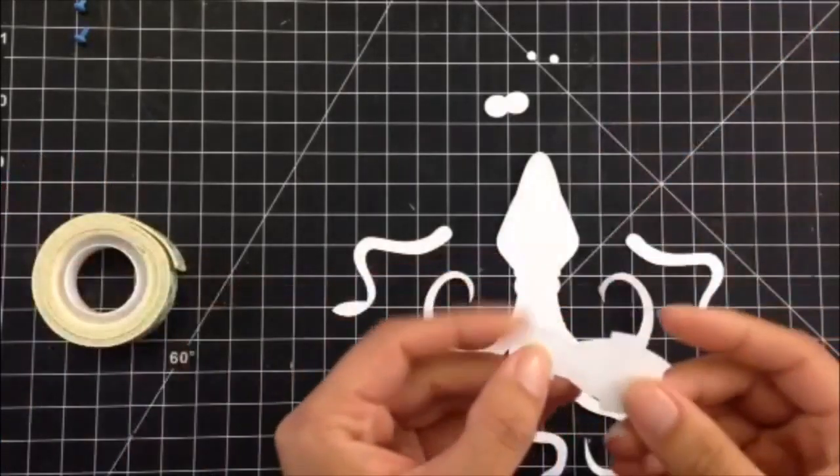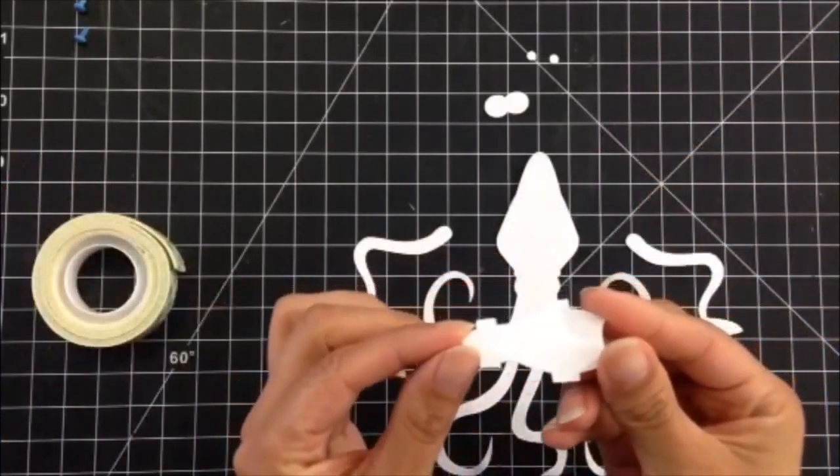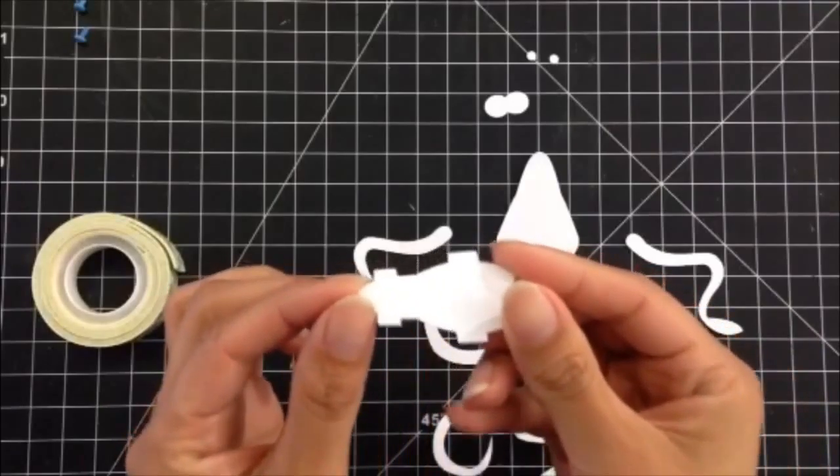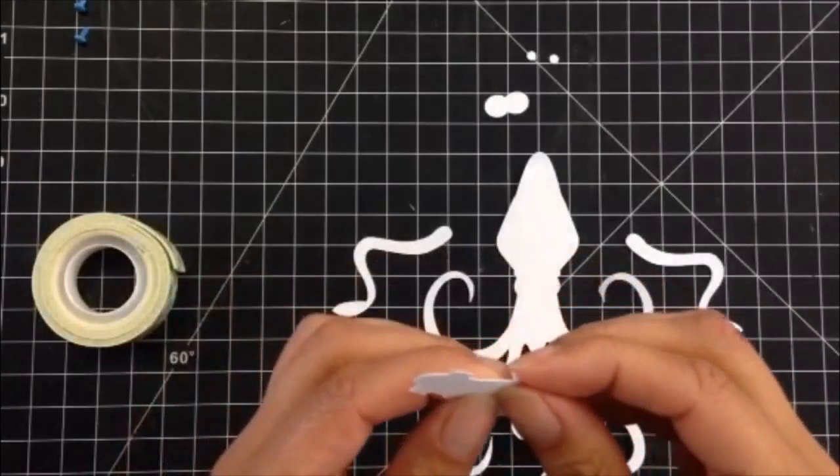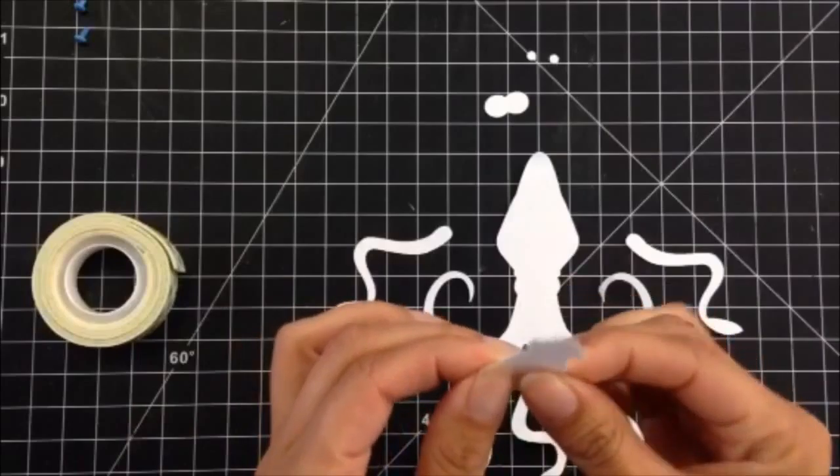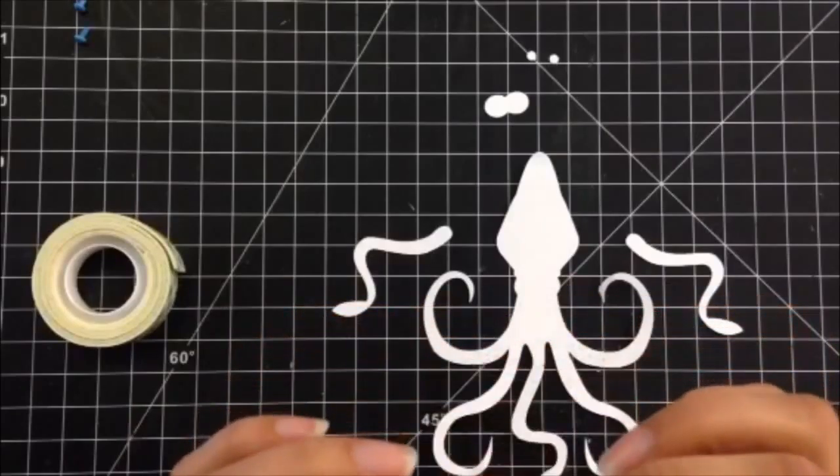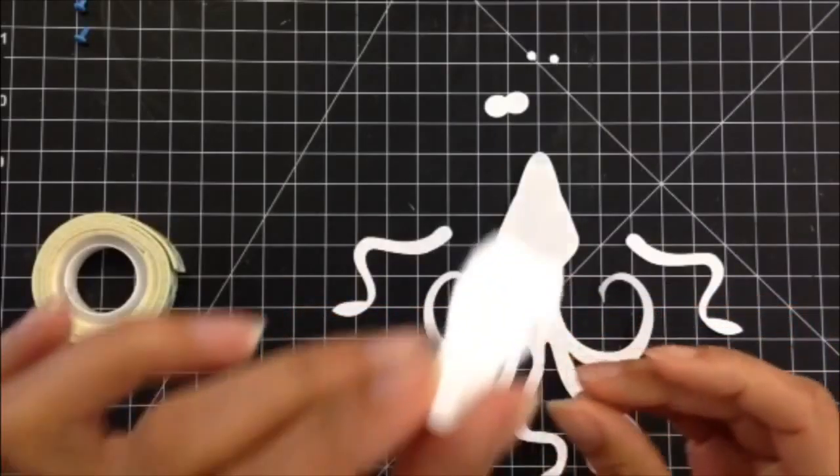The head has four square pieces sticking out. You want to fold those inside. It doesn't matter what side. Look the same. It looks like that.